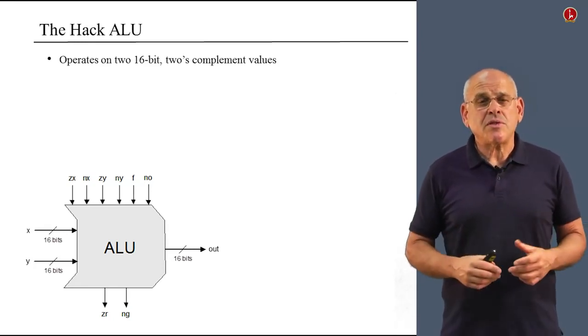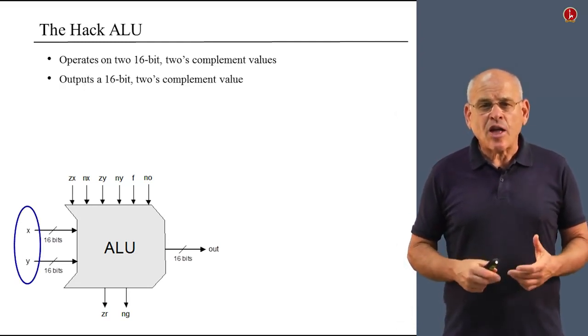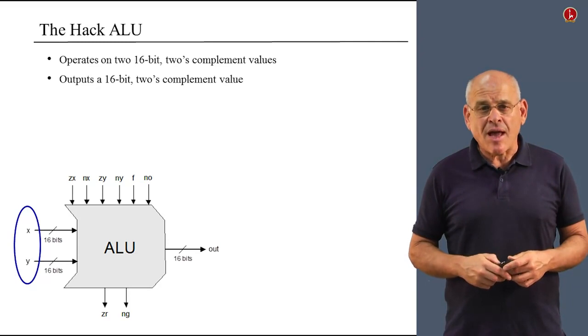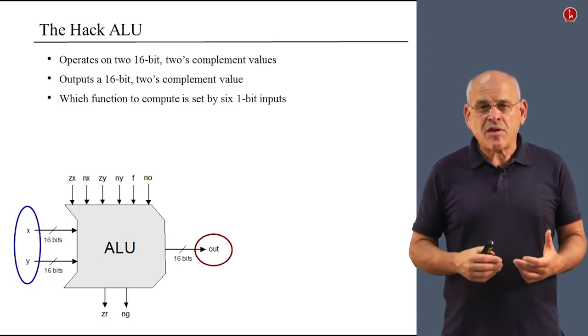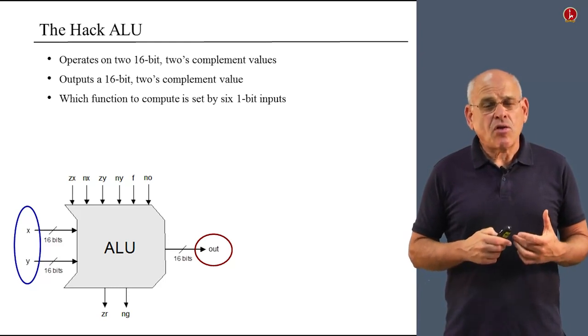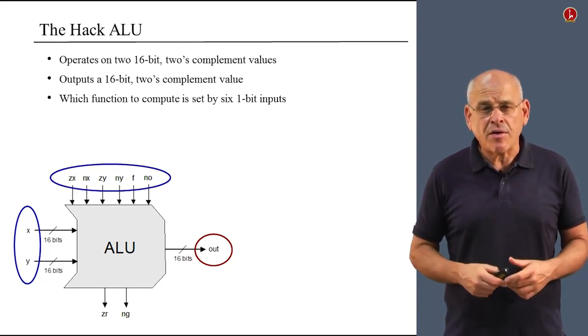As we see, the ALU has two 16-bit data inputs, which we call x and y. It outputs a single 16-bit output, which we call out. Which function to compute is determined by six control bits that have strange names like zx and nx and so on. We will explain these names in just a few minutes.